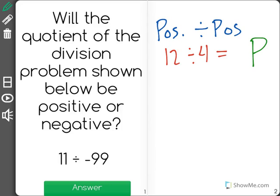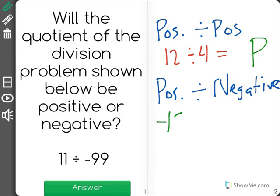We could have a positive divided by a negative, or vice versa. So that could be something like one positive and one negative number could be like negative 15 divided by 3, and our answer there would be negative.